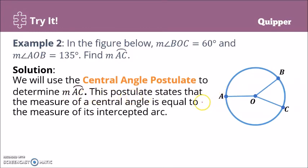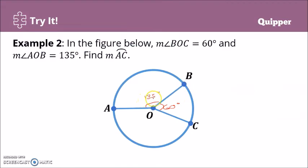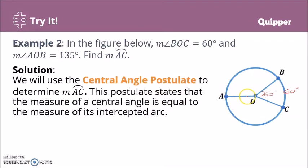The Central Angle Postulate states that the measure of a central angle is equal to the measure of its intercepted arc. So angle BOC was 60 degrees, meaning arc BC is also 60 degrees. And angle AOB is 135 degrees, meaning the intercepted arc AB is also 135 degrees.